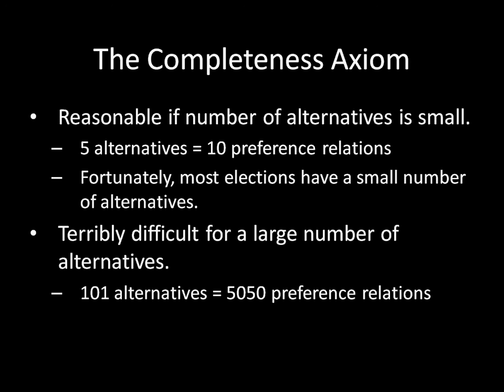So the completeness axiom is very reasonable when there are a small number of alternatives, and much more unreasonable when there are a large number of alternatives. But it's not a big deal for what we're talking about, since we'll mostly be dealing with a small number of alternatives. That wraps up this video on the completeness axiom. In the next video we will talk about the transitivity axiom — join me then.